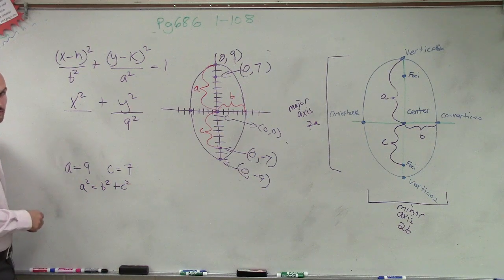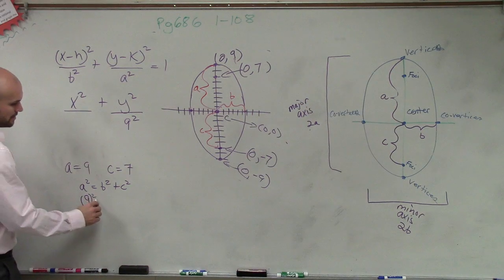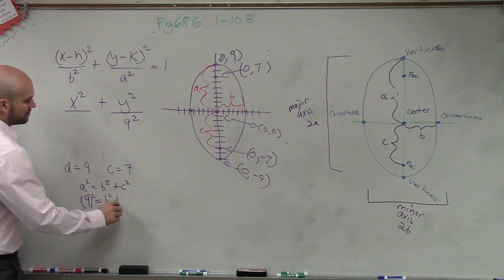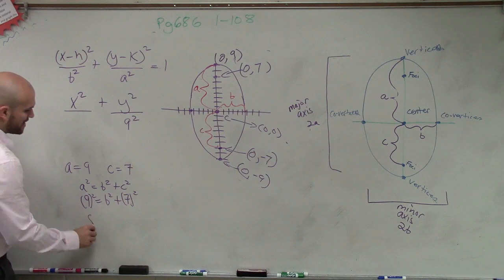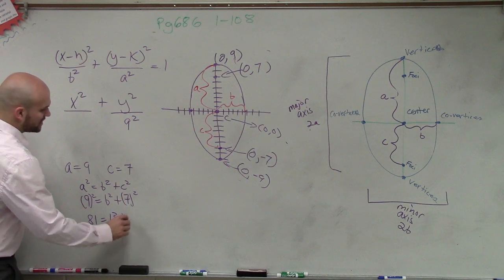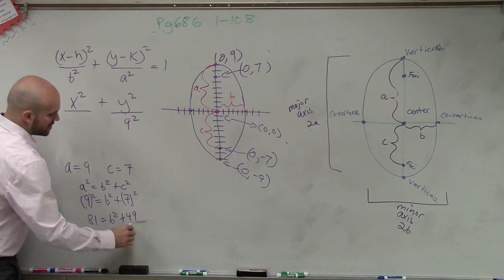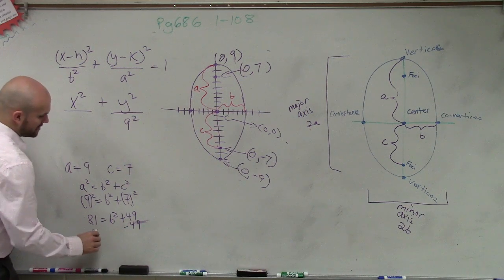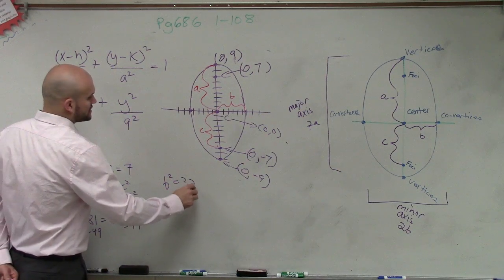So a squared equals b squared plus c squared. So therefore, I have 9 squared equals b squared plus c squared. So therefore, I have 81 equals b squared plus 49. So then I solve for b squared by subtracting 49. And therefore, I get b squared equals 32.